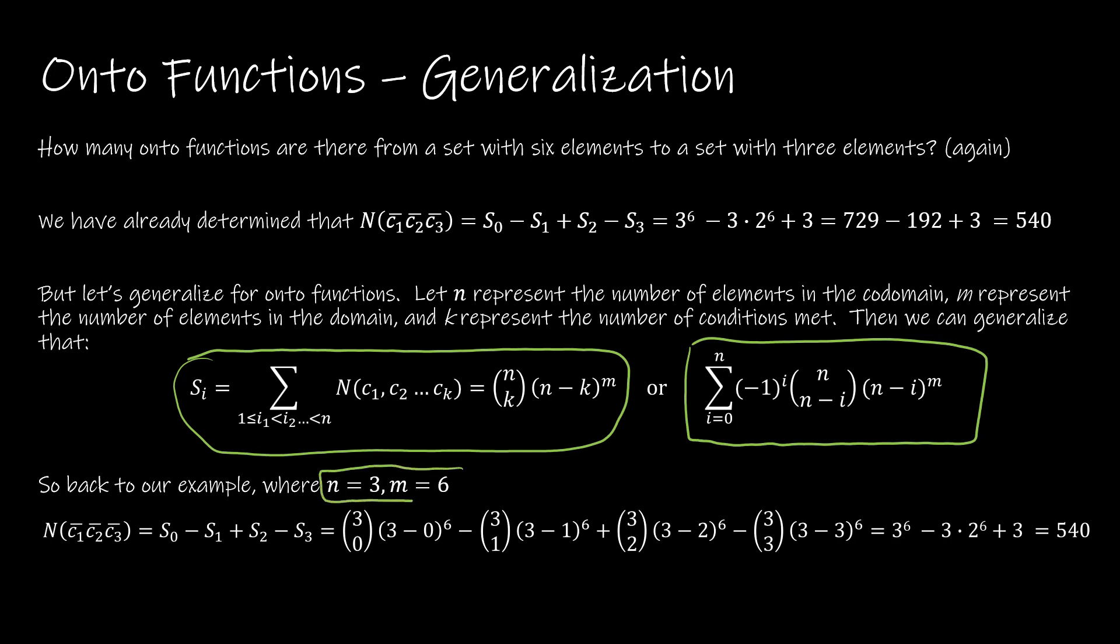Based on where we had n equals 3 and m equals 6, so from a set with six elements, which is m, to a set with three elements, which is n, we're going to say S₀ is (3 choose 0) × (3 - 0)⁶.